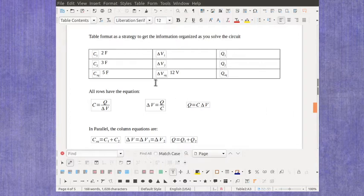When I go to the rows then, I notice that on this bottom row, I actually have two values with only one unknown. And so I could solve for the charge by taking my values here and multiplying them. So I would have my 5 farads times 12 volts, which is going to give me 60 coulombs.